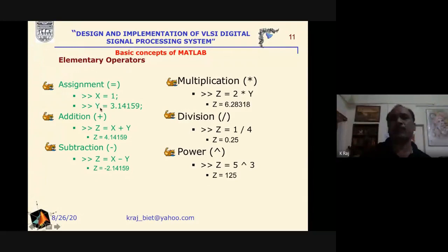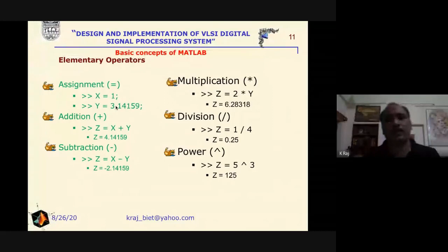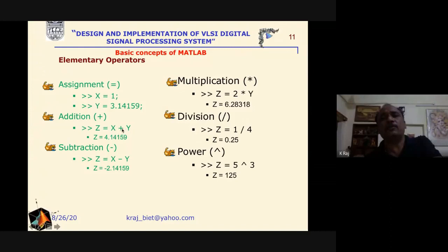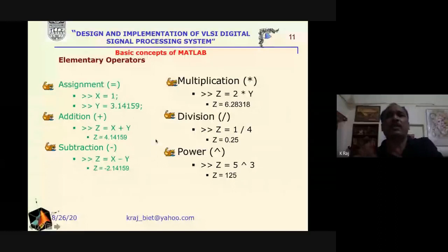To assign some values, at the MATLAB prompt you type the variable name, equals sign, and the value. If you terminate with a semicolon, the command is suppressed; if there is no semicolon, the result is displayed. For addition you use x + y, for subtraction the subtraction sign, for multiplication the multiplication symbol, for division the slash, and for power the caret symbol.